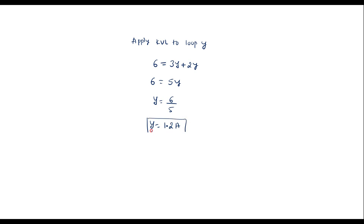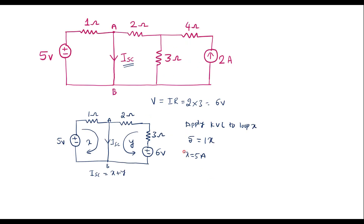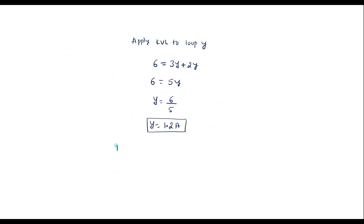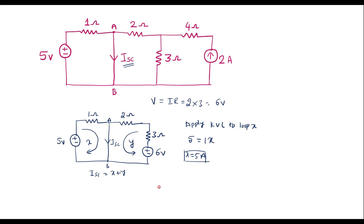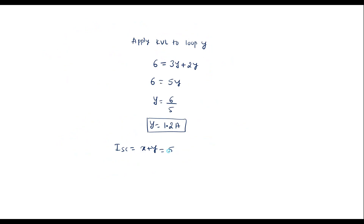This is the Y value and this is the X value. Therefore, short circuit current ISC equals X plus Y, which equals 5 plus 1.2. Therefore ISC equals 6.2 amps. We have found ISC = 6.2 amps. Now we are supposed to calculate Norton's resistance, that is Rn.